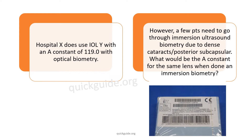For example, some lenses manufactured beyond 2015 — say new-age IOLs from 2016, 2017, 2018, or 2019 — the box A constant would likely be an optical biometry A constant. So what would be the A constant if we are doing immersion biometry for this lens?